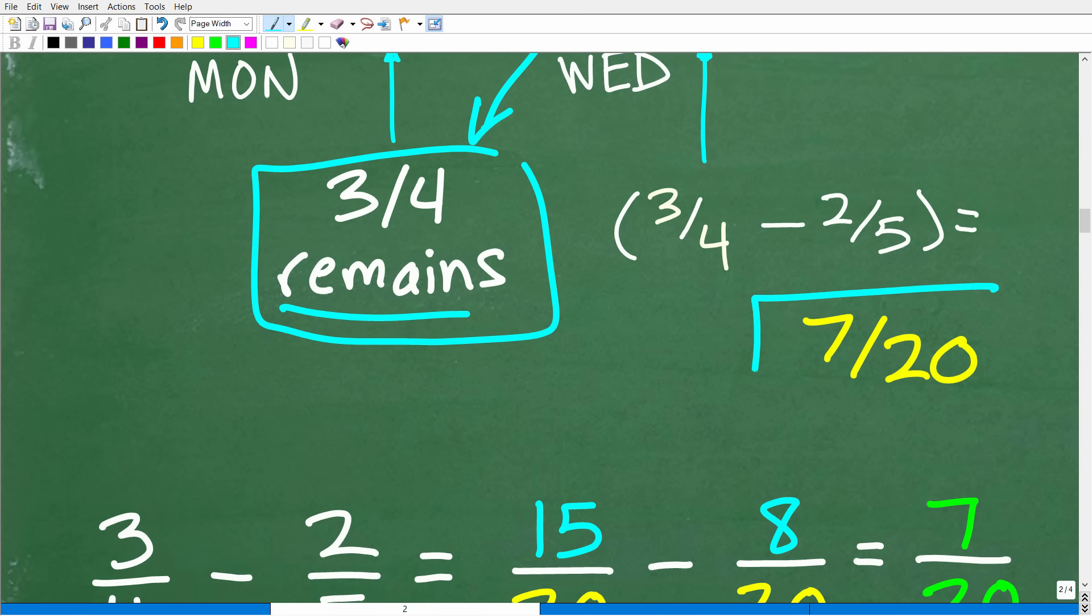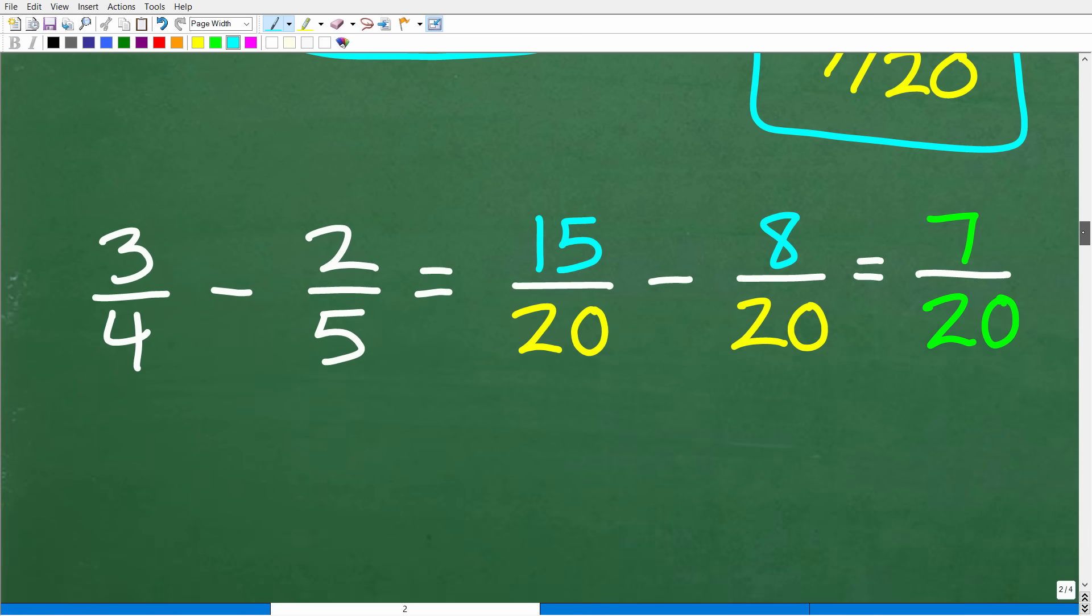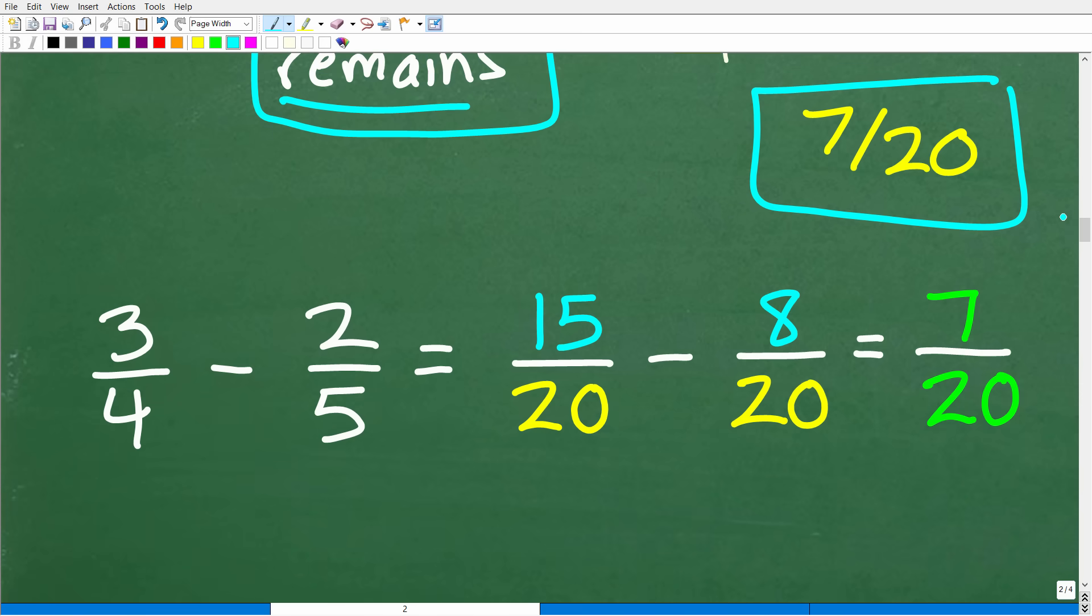And, of course, the answer is seven over 20. But let's just quickly review how to subtract fractions for those of you that may have forgotten. So here we have three fourths minus two fifths. Remember, when you add and subtract fractions, you have to have these bottom numbers, the denominators, the same. So what is the same denominator? Well, that concept is called the lowest common denominator. So in this particular case, the LCD is 20, okay? So we're going to change both of these fractions such that the denominators are 20.